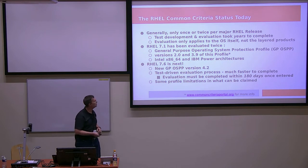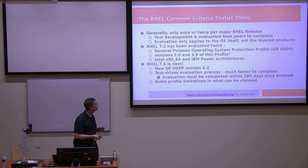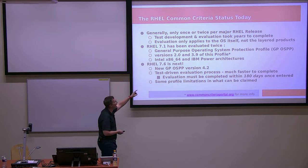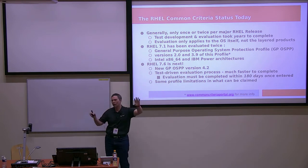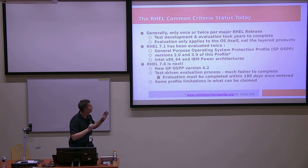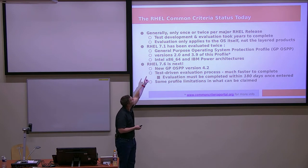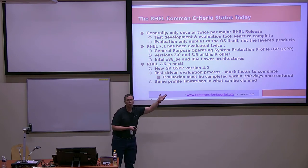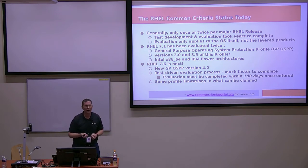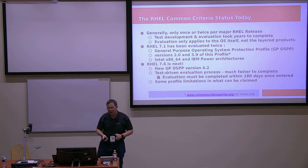There have been significant changes in the U.S. around Common Criteria. We now have a new General Purpose Operating System Protection Profile version 4.2. The evaluation process under 4.2 and NIAP is extremely fast by Common Criteria standards — once formally entered into certification, we're required to complete within 180 days, typically 90 to 180 days. The RHEL 7.1 evaluation took two years. So 180 days versus two years — it's like light speed. The process is now much more automated and test-driven.